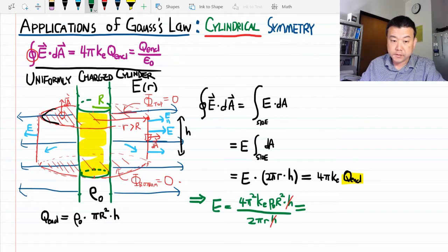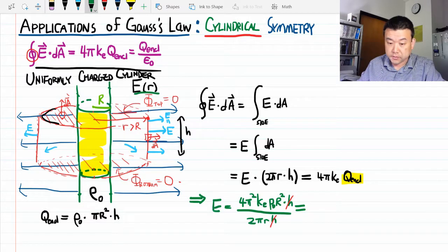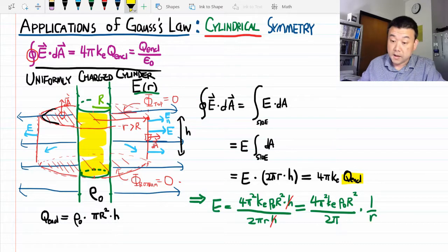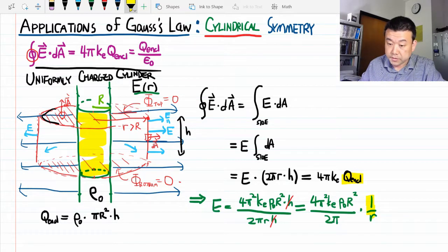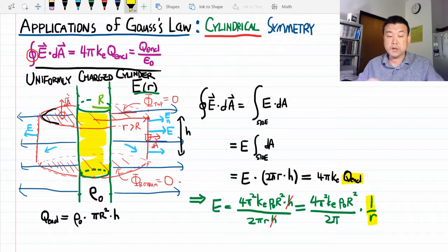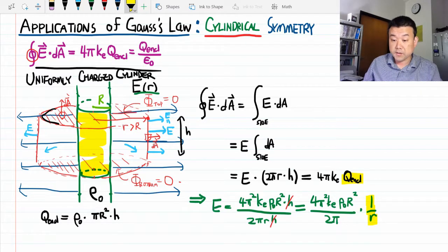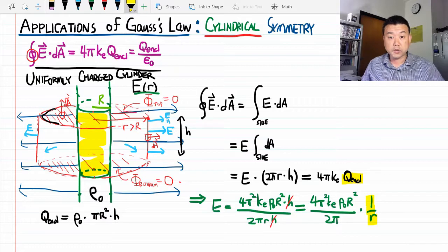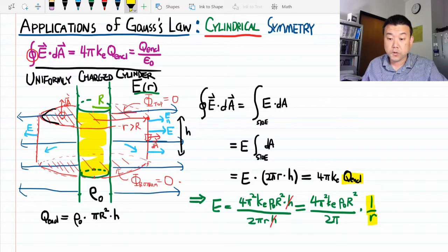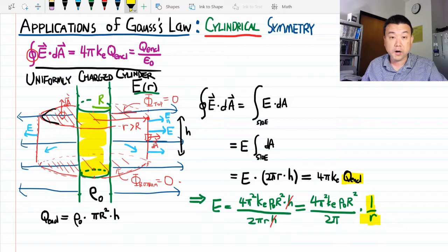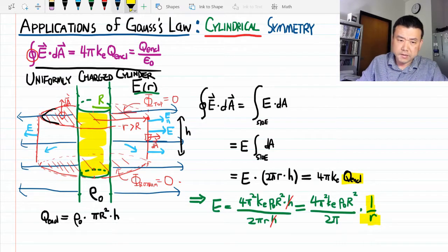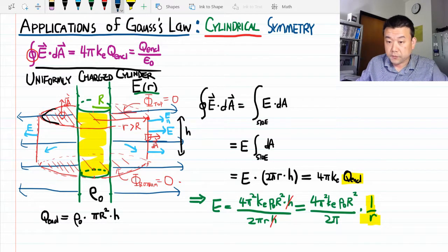So we have this result: electric field outside a cylinder equals constants times 1/r. This is what I wanted you to notice—with an infinitely long cylinder, the distance dependence of the electric field magnitude goes as 1/r, not 1/r². We can do a little more simplification.